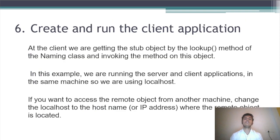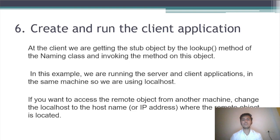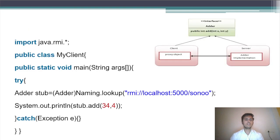Step six: create and run the client application. At the client side, we get the Stub object by the lookup method of the Naming class and invoke the method on this object. In this example, we are running the server and client application on the same machine, so we are using localhost. If you want to access the remote object from another machine, change localhost to the host name or IP address where the remote object is located. Here we create a MyClient class with a main function, make an object of the Adder class, print the sum of 34 plus 4, and catch the exception.